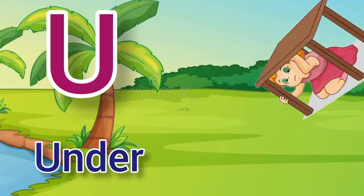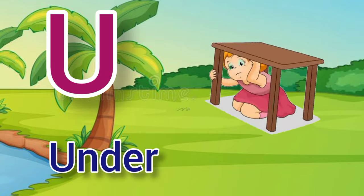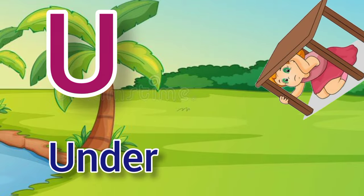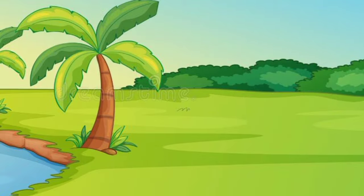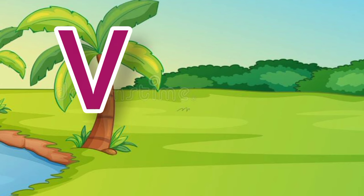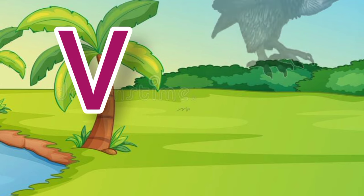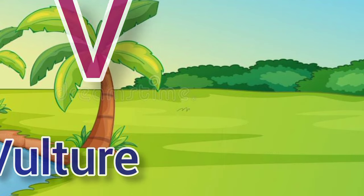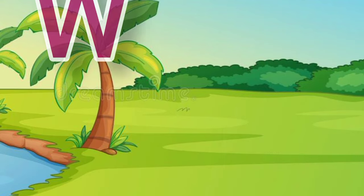U for under, under means neechi. V for vulture, vulture means geet.